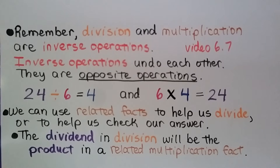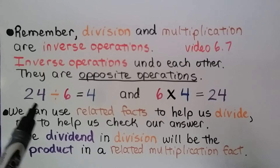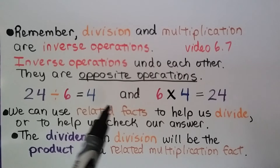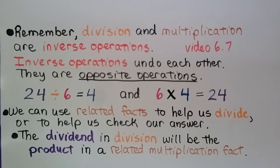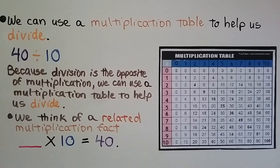Remember that division and multiplication are inverse operations — they undo each other; they're opposite operations. For example, 24 divided by 6 is equal to 4, and 6 times 4 is equal to 24. We can use related facts to help us divide or to check our answer. The dividend in division will be the product in a related multiplication fact. We can use a multiplication table to help us divide.